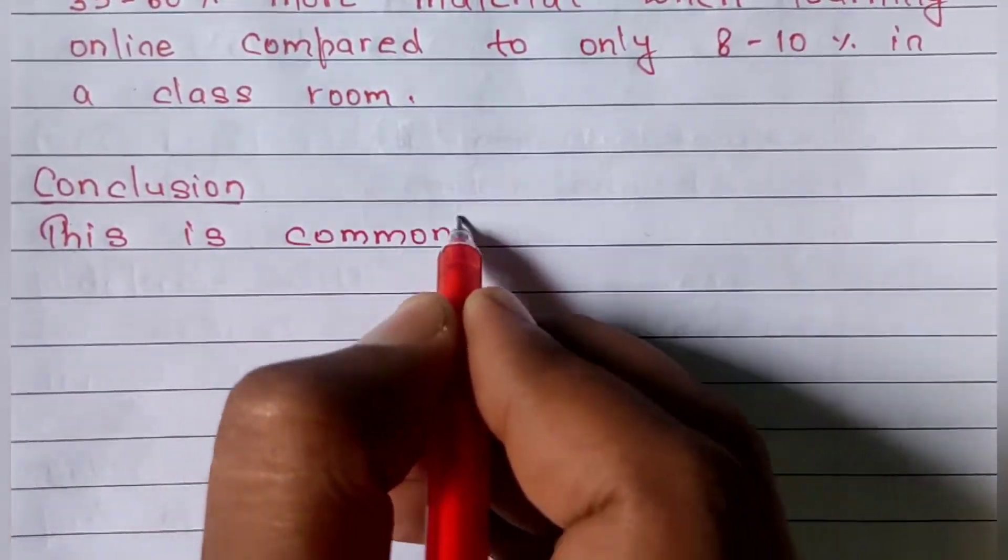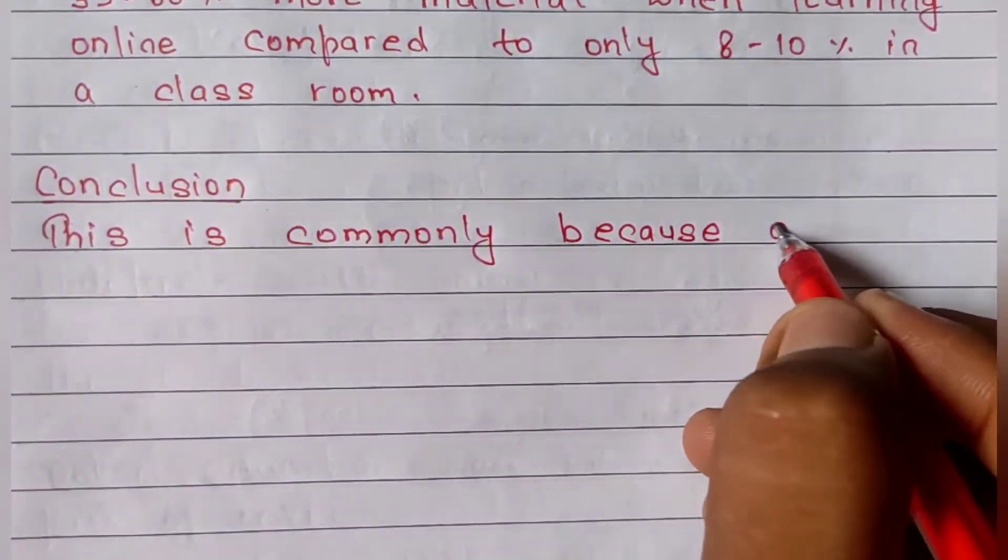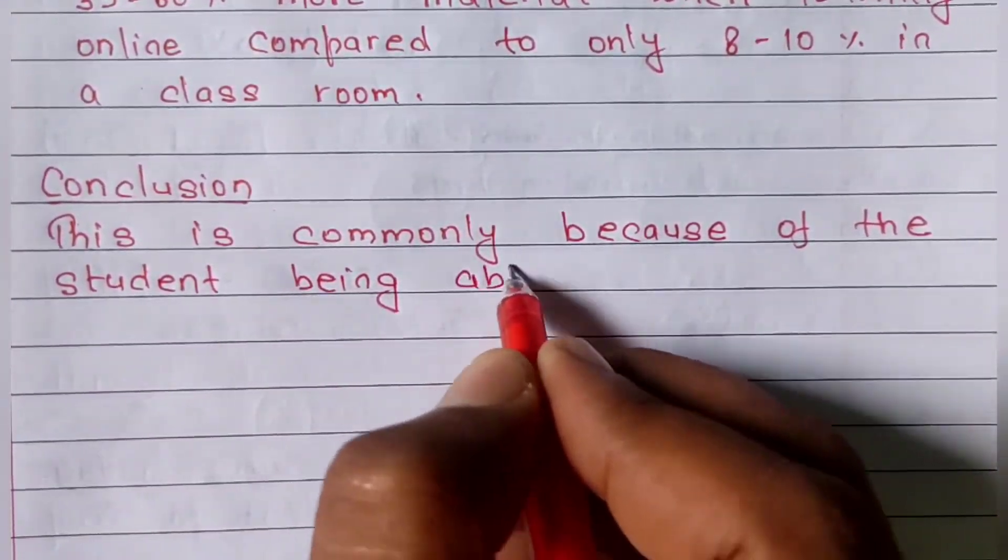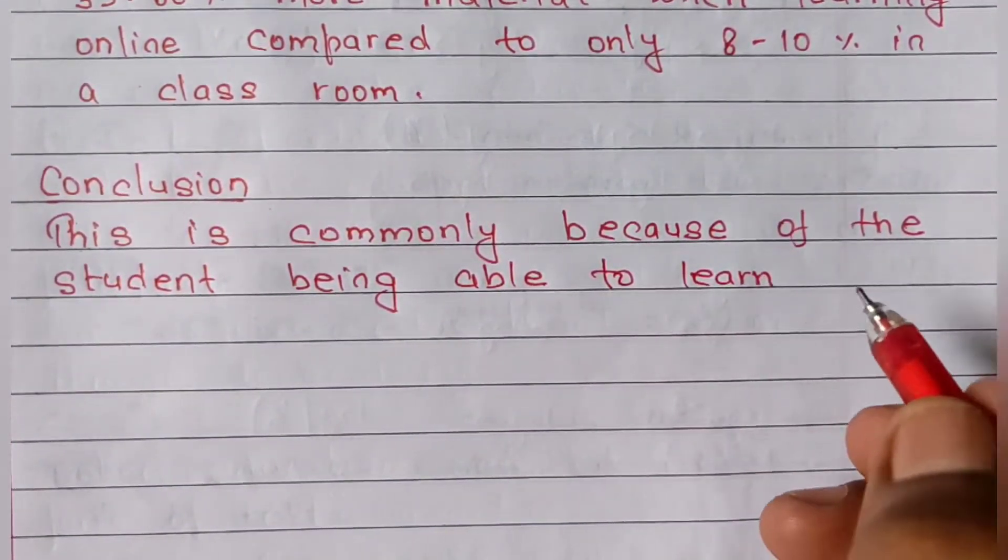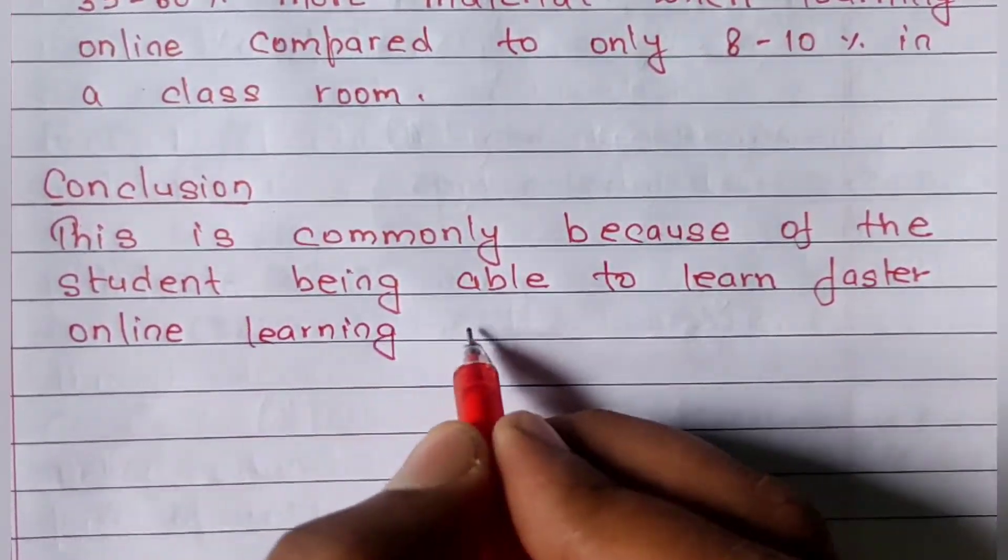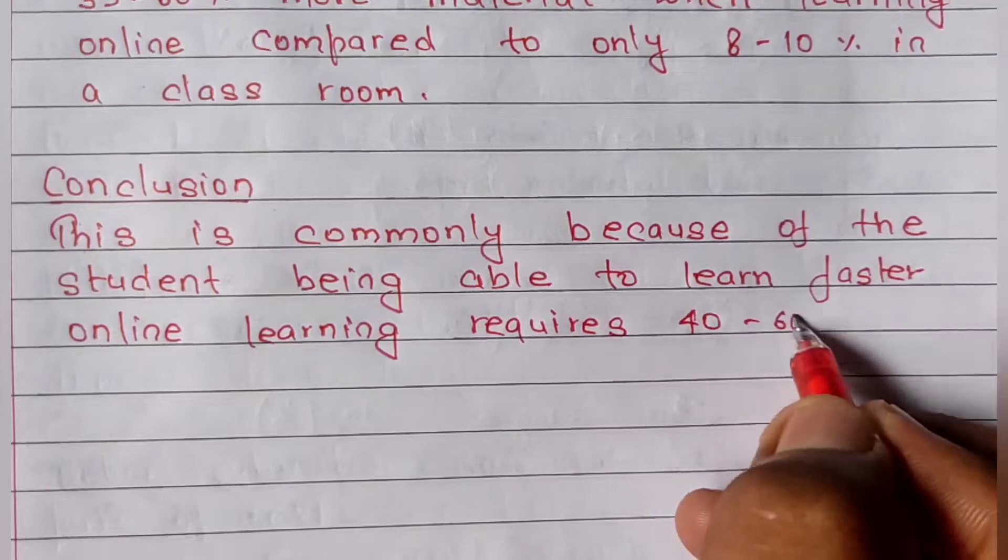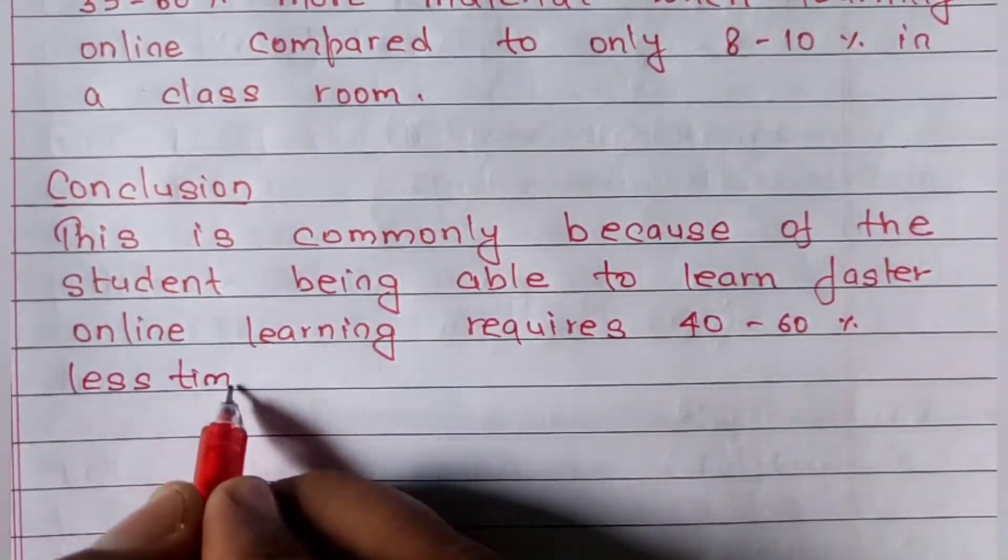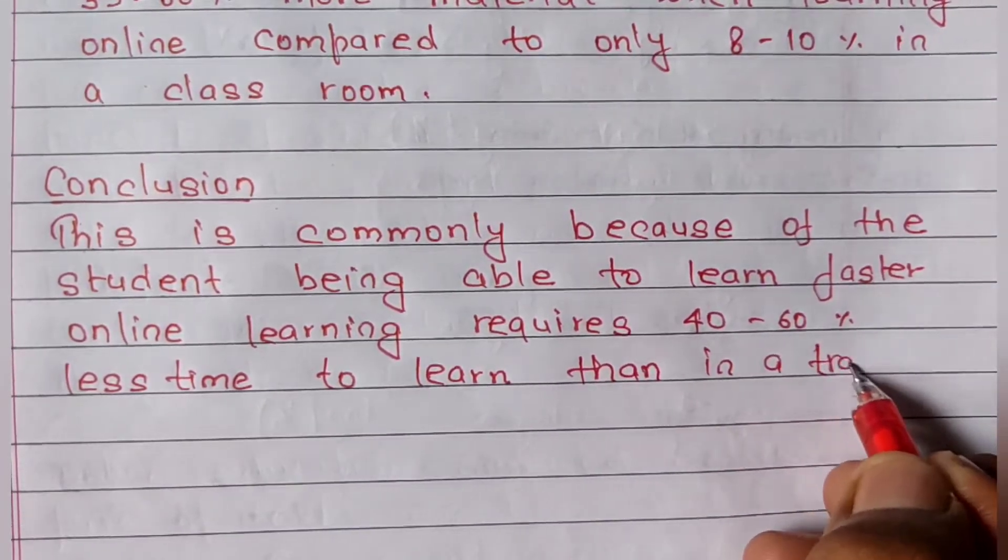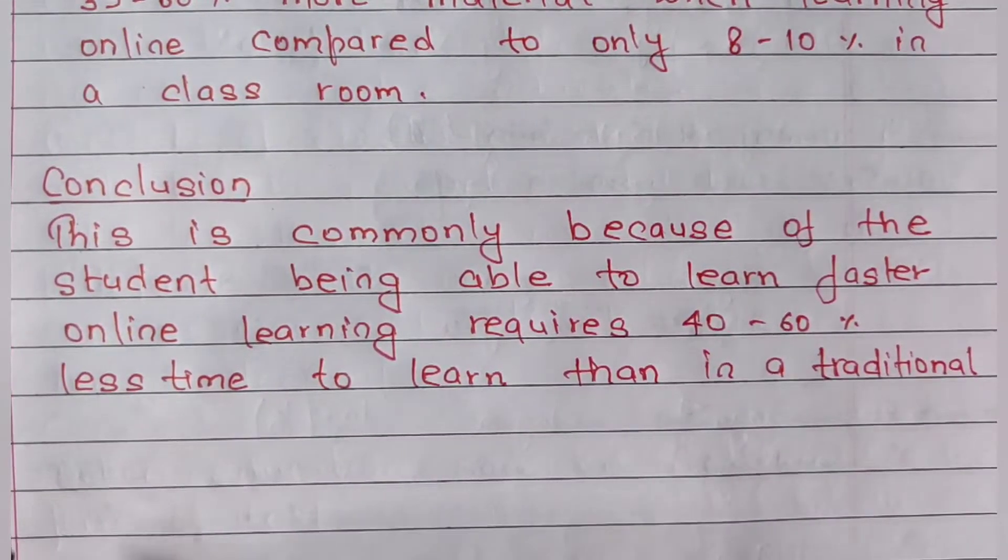In conclusion, online education is commonly used because students are able to learn faster. Online learning requires 40 to 60 percent less time to learn than in a traditional classroom.